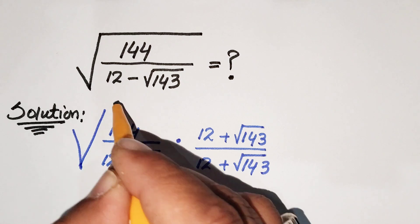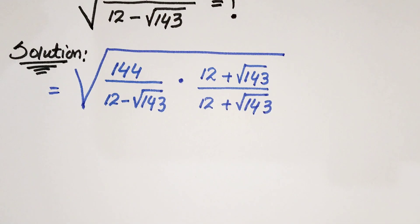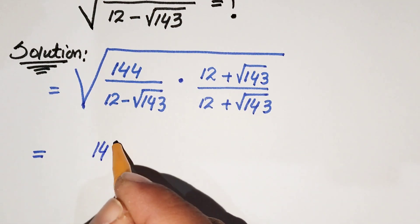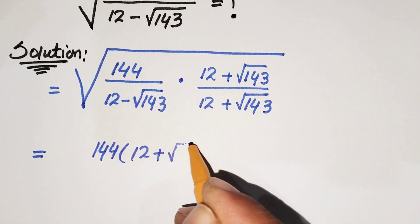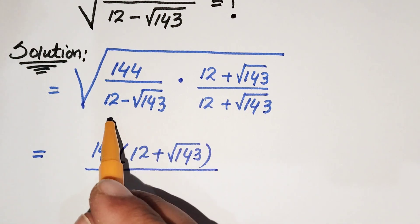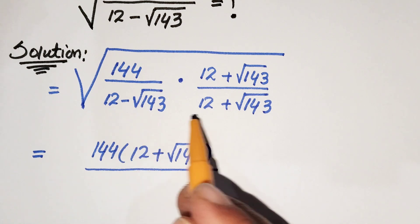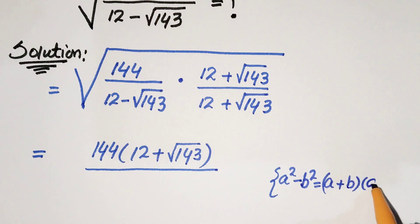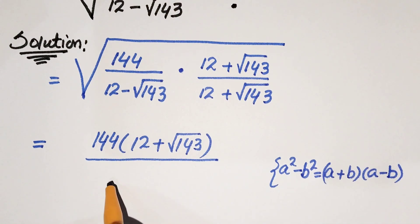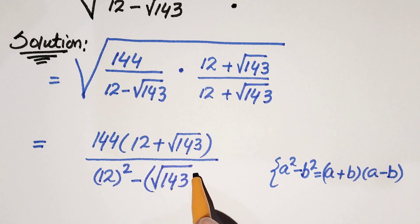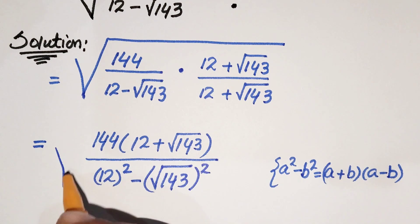So now, taking the whole square root. We multiply the numerator: 144 times 12 plus square root of 143, all over the denominator. Let's call it a minus b times a plus b — by the algebraic formula, this equals a squared minus b squared. So we write 12 squared minus square root of 143 whole squared, all under the square root.